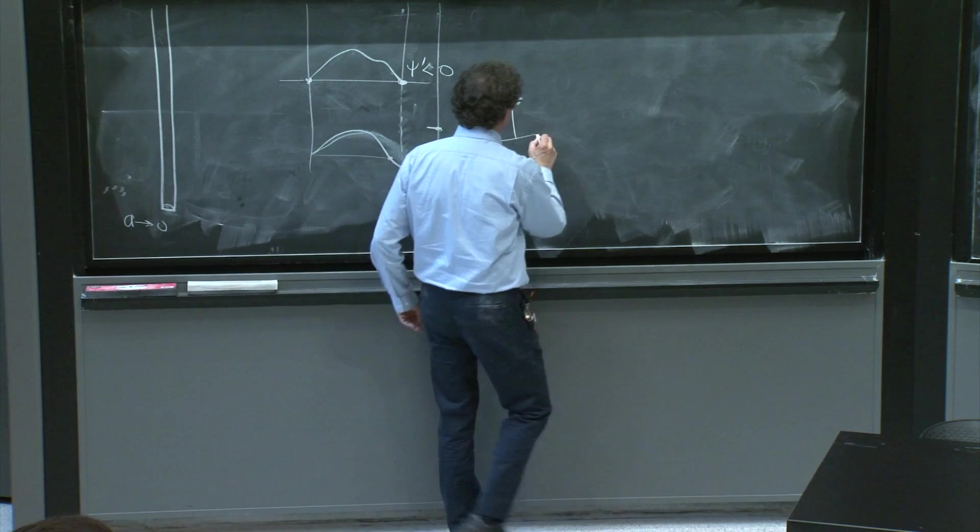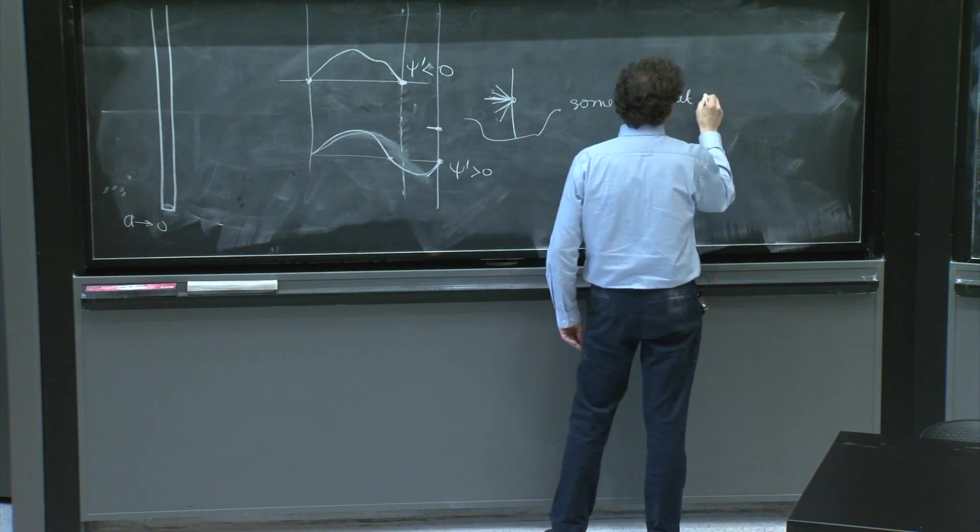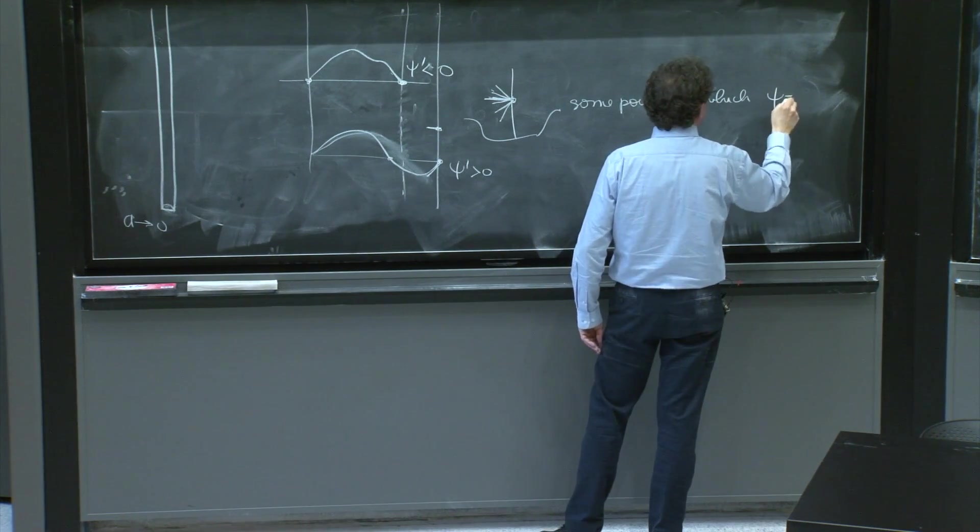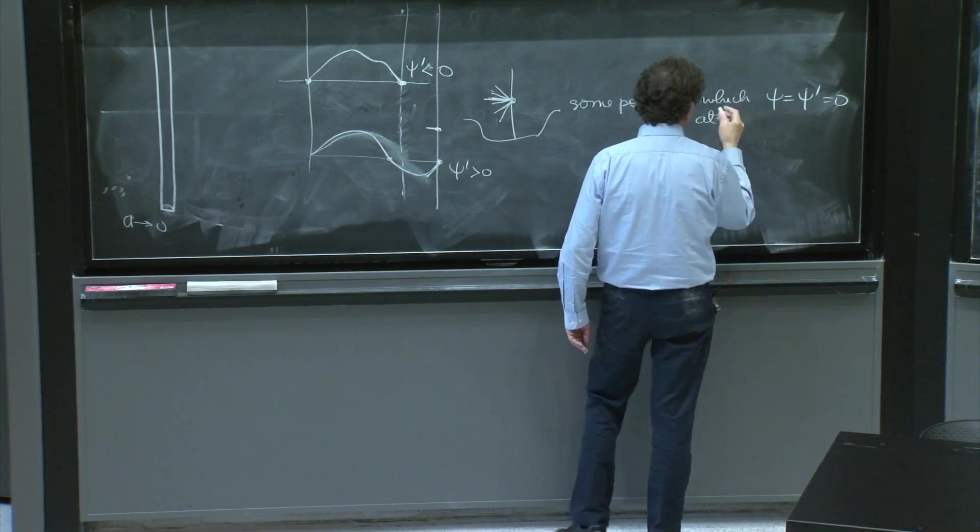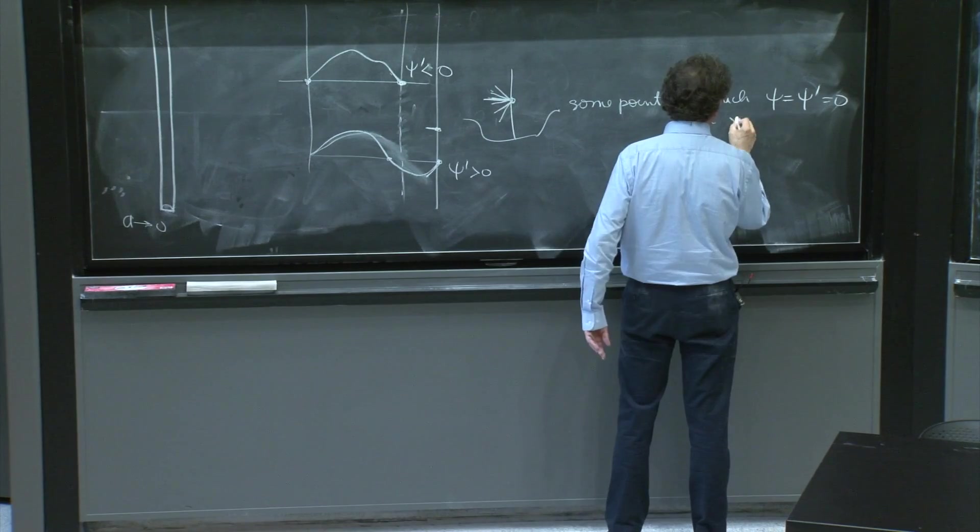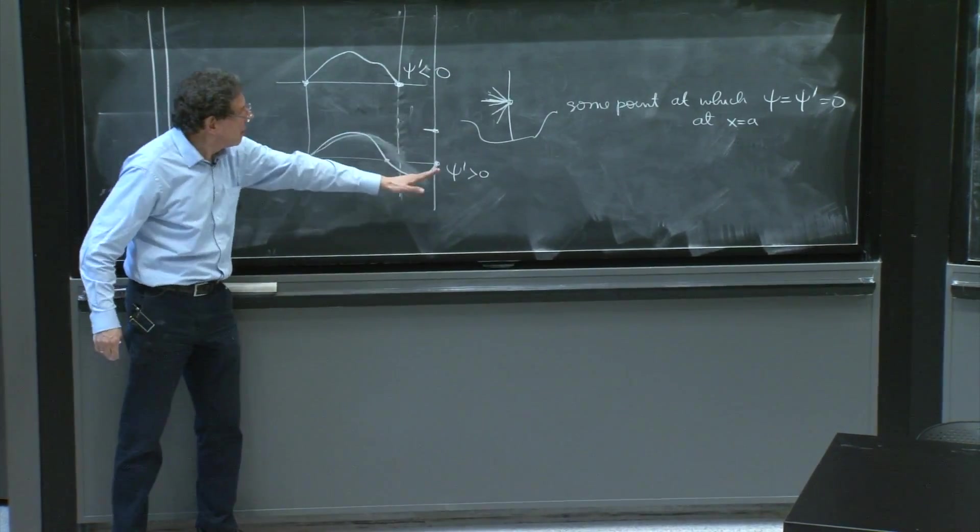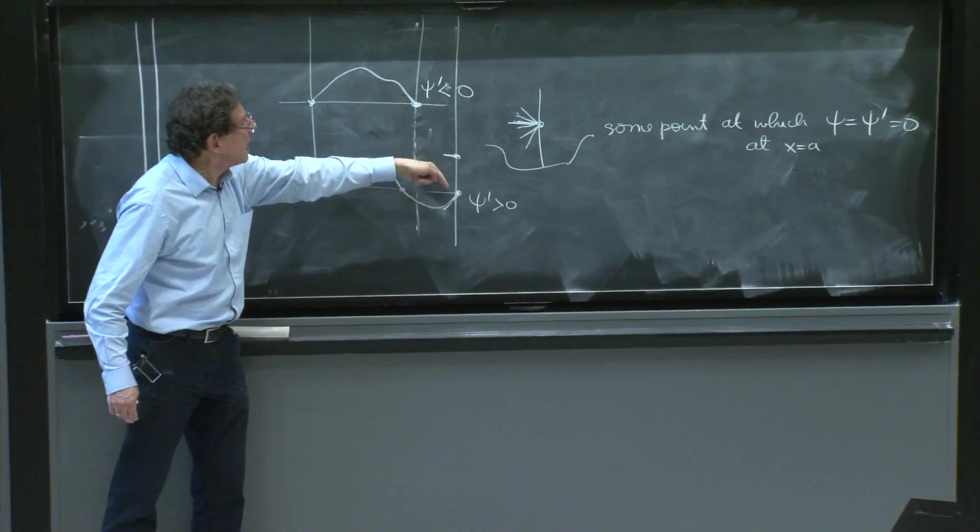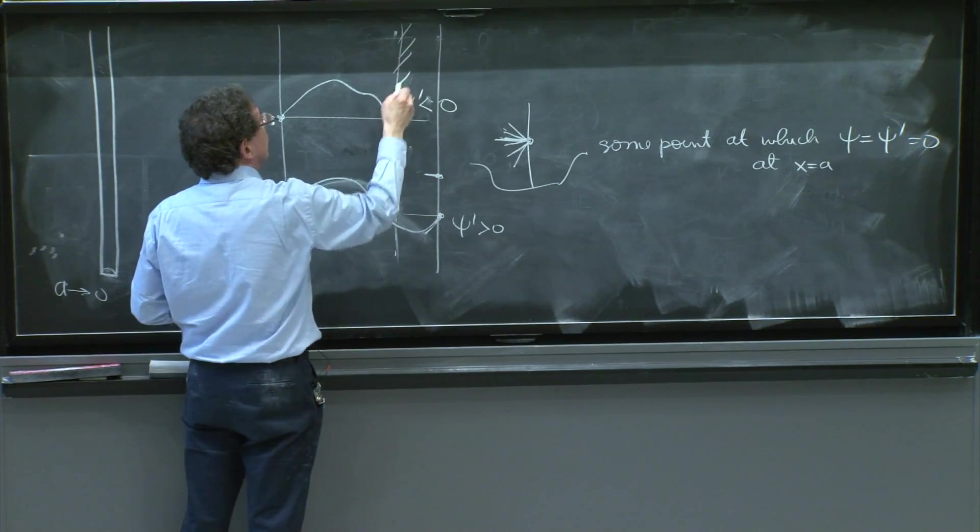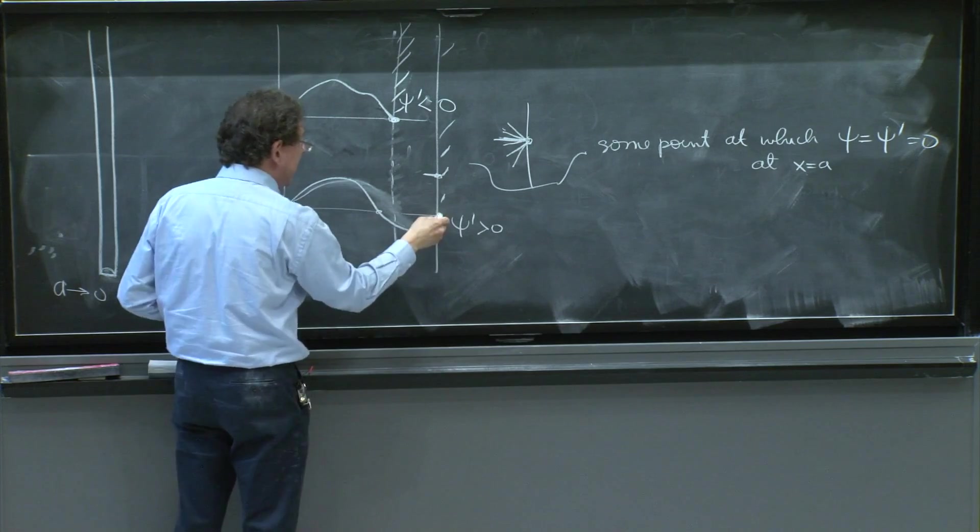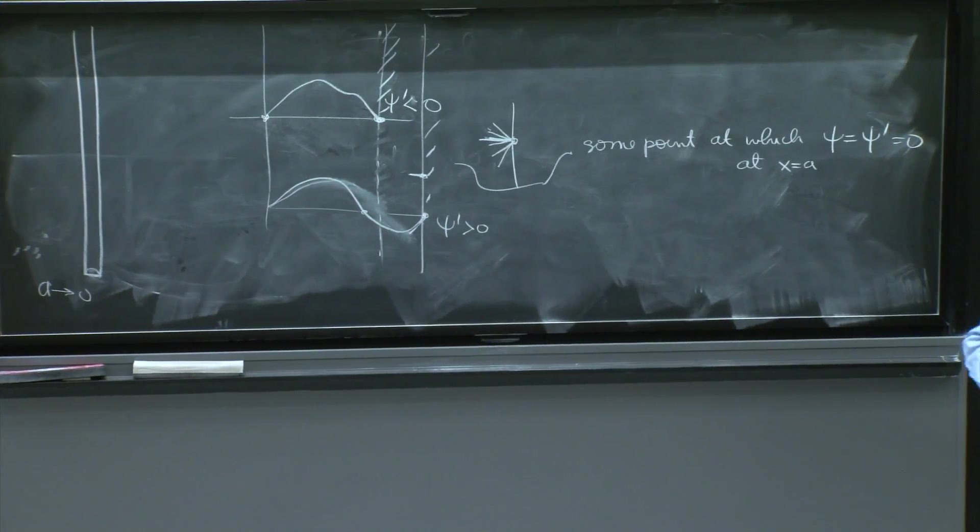And therefore, there must have been some point at which ψ and ψ prime were both 0 at the end point, x equal a, whatever the value of a was. Because ψ prime here is positive and here is negative. So at some point, it was 0. But since it's at the point where you have the infinite square well, ψ is also 0. And you would have both ψ and ψ prime equal 0, which is impossible.